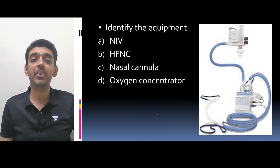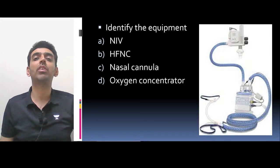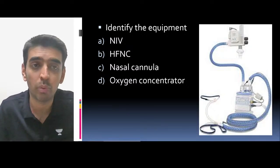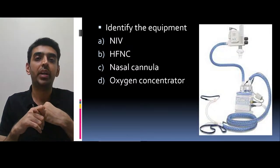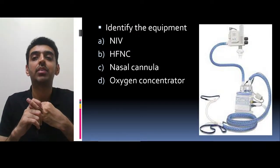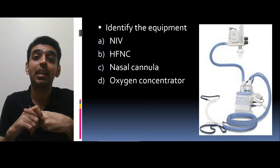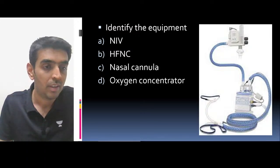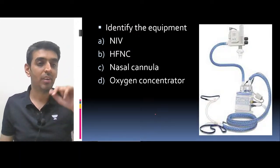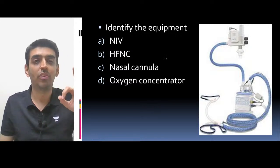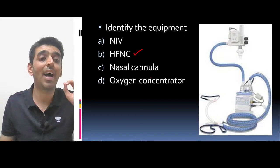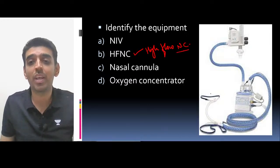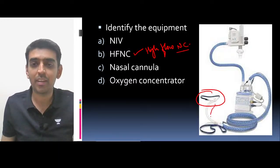Moving on to the next question: identify the equipment. This was asked in last year's INICET as well as NEET PG. Options are: NIV (non-invasive ventilator), HFNC (high flow nasal cannula), nasal cannula, or oxygen concentrator. Bang on — everybody is correct. This is HFNC, that is high flow nasal cannula. You can see the nasal cannula attached to tubing.